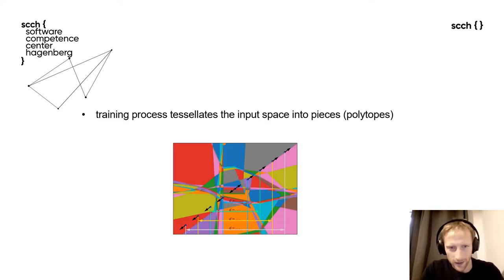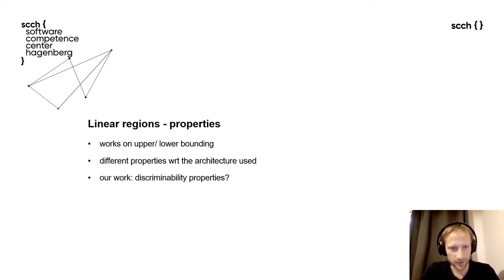To slow down a little bit and to put those definitions into practice, let's focus on the current figure. In the background, we can see a tessellation of the input space resulting during the training process of the neural network. We call elements of data tessellation linear regions.